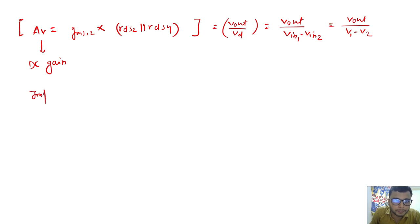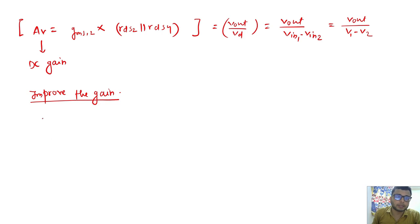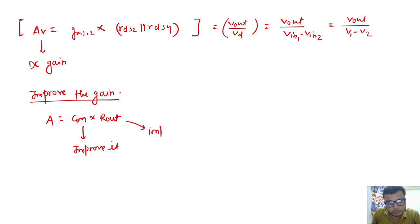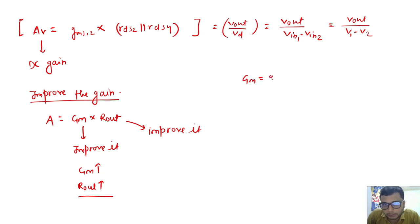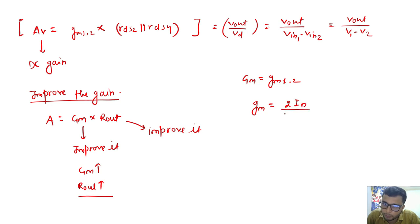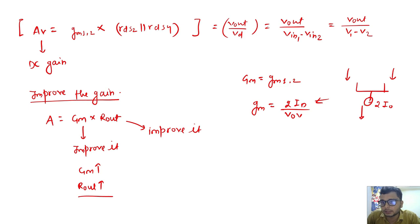Now the main point: how to improve the gain? This is asked in interviews as well — improve the gain, and what are the limitations. In the gain expression GM × Rout, we can either improve GM, improve Rout, or improve both. If GM is increased, the gain increases. If Rout is increased, the gain increases. What is GM for this structure? It is the GM of the input pairs, which for any transistor is GM = 2·ID / V_overdrive.